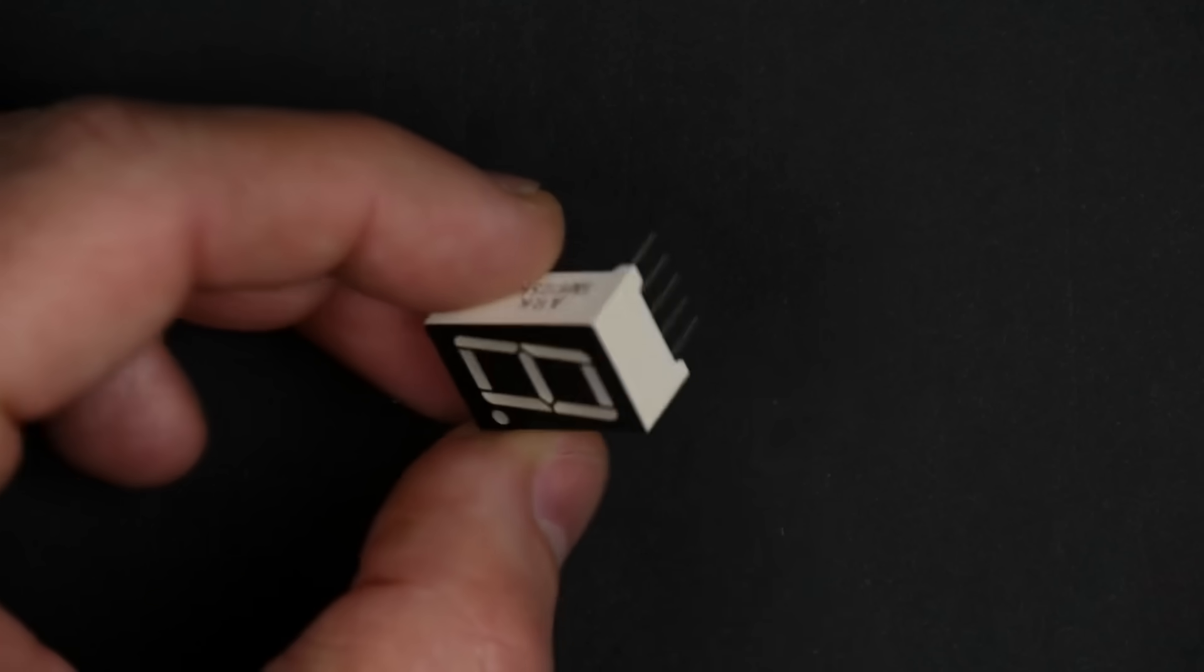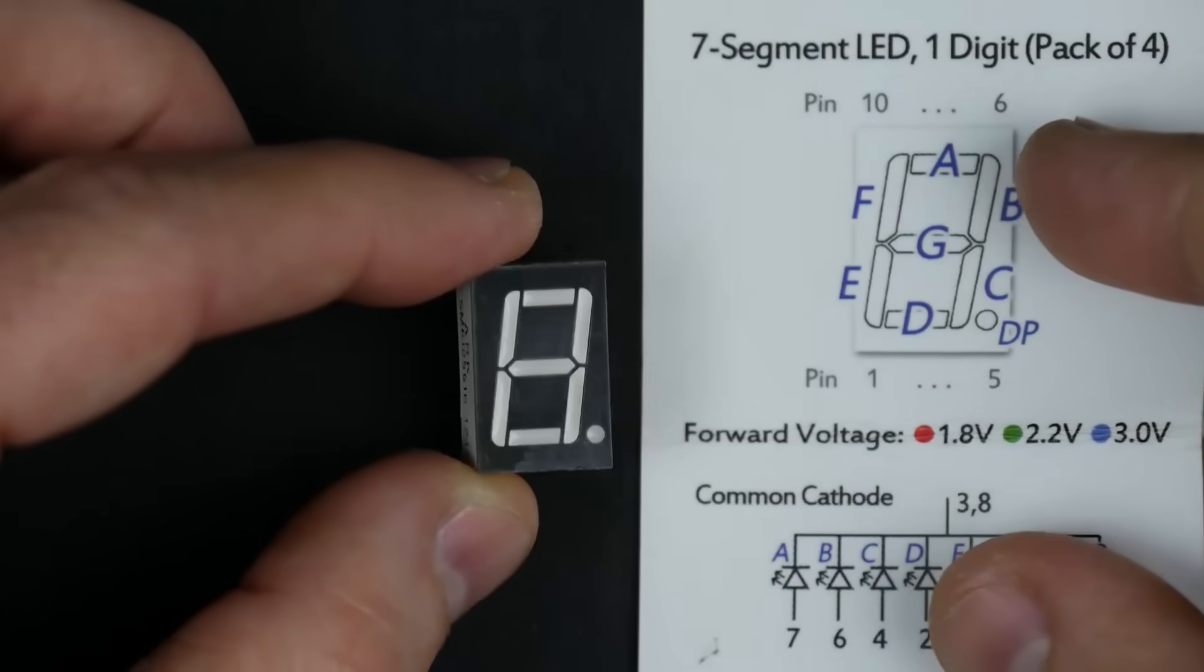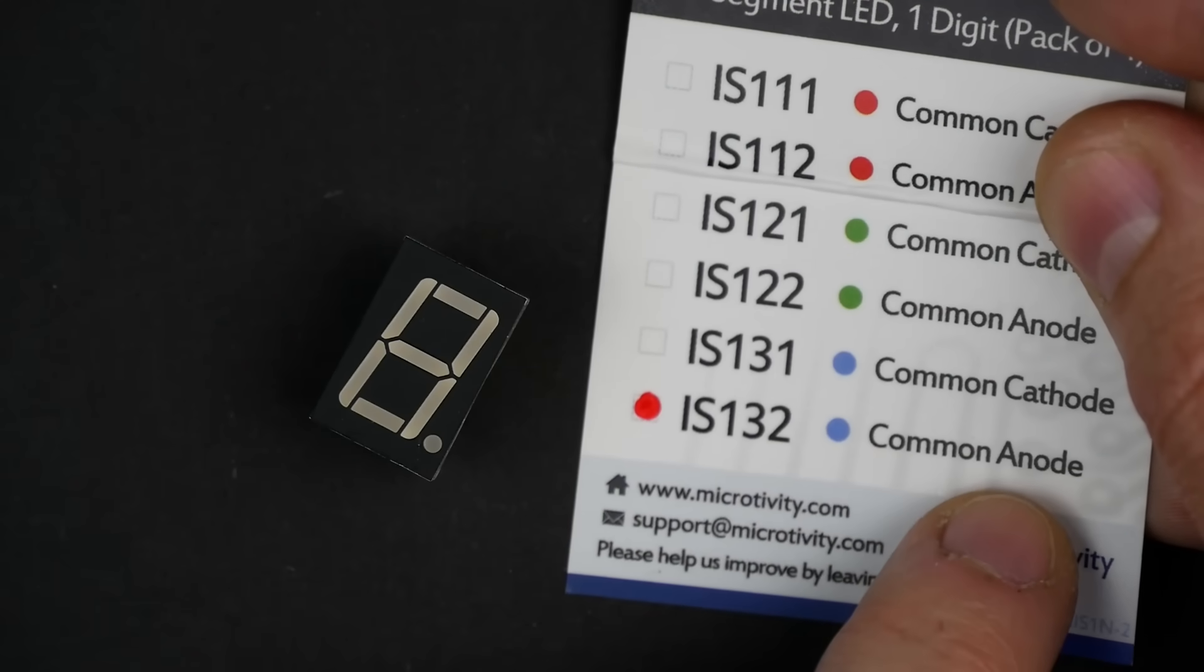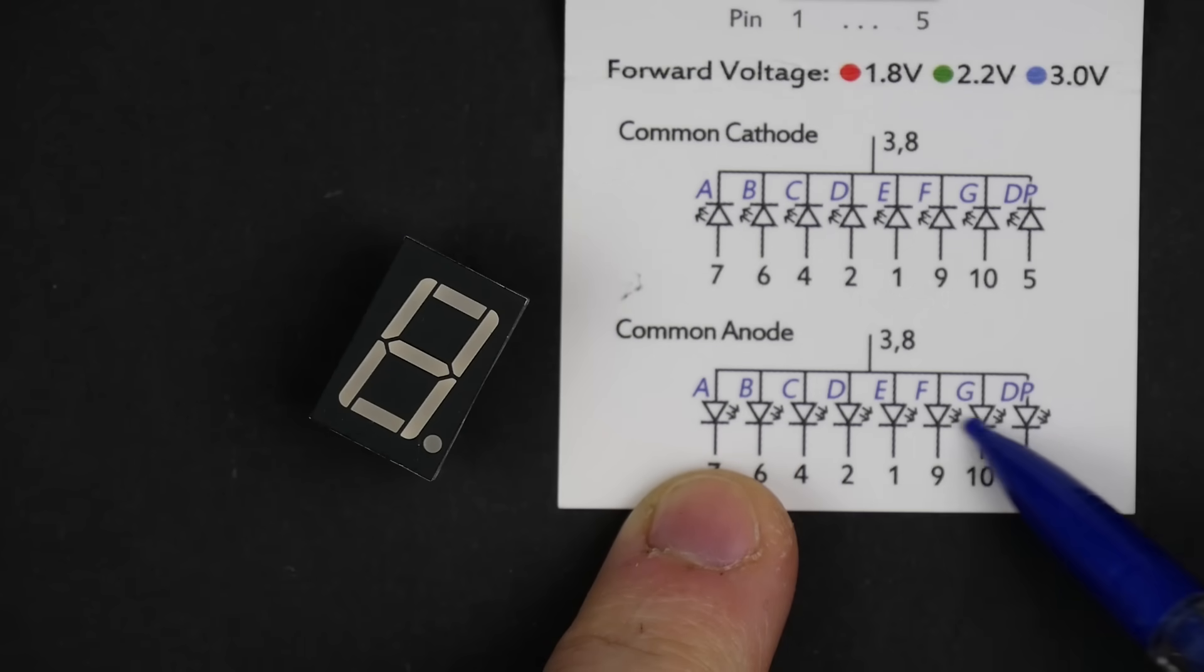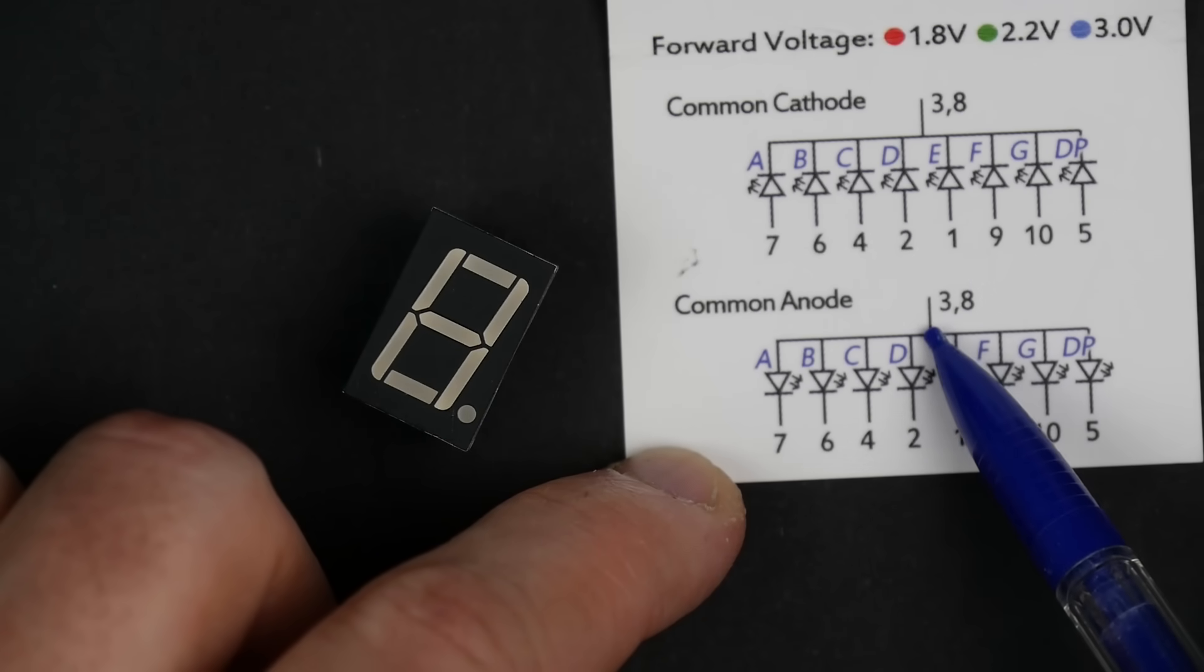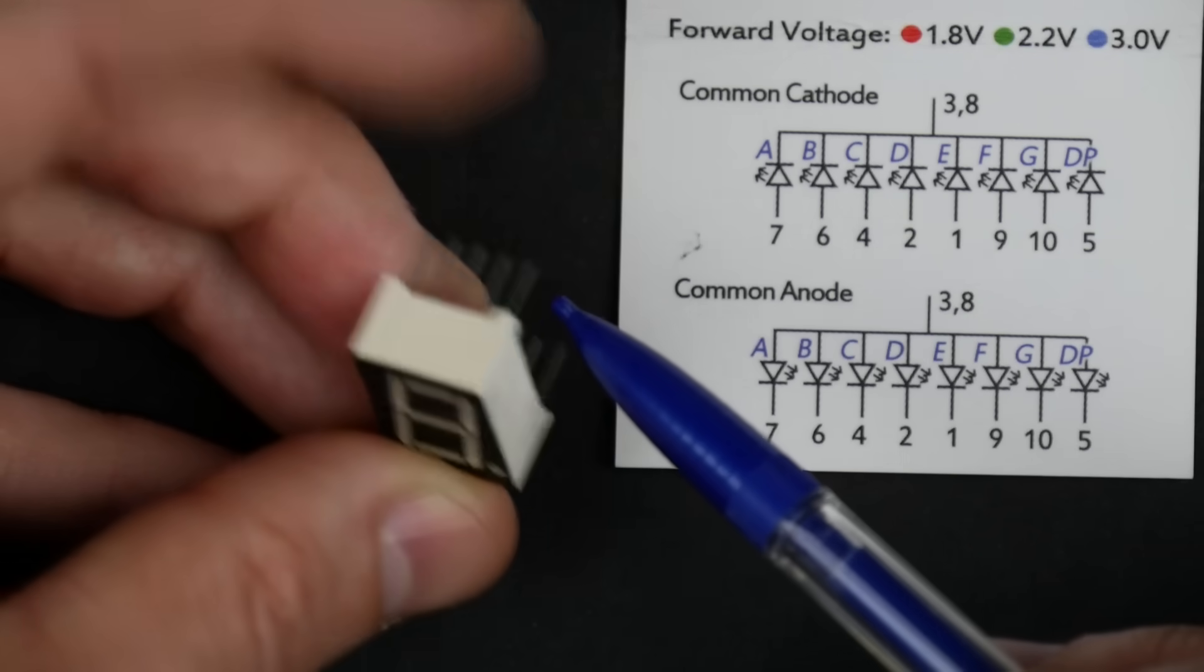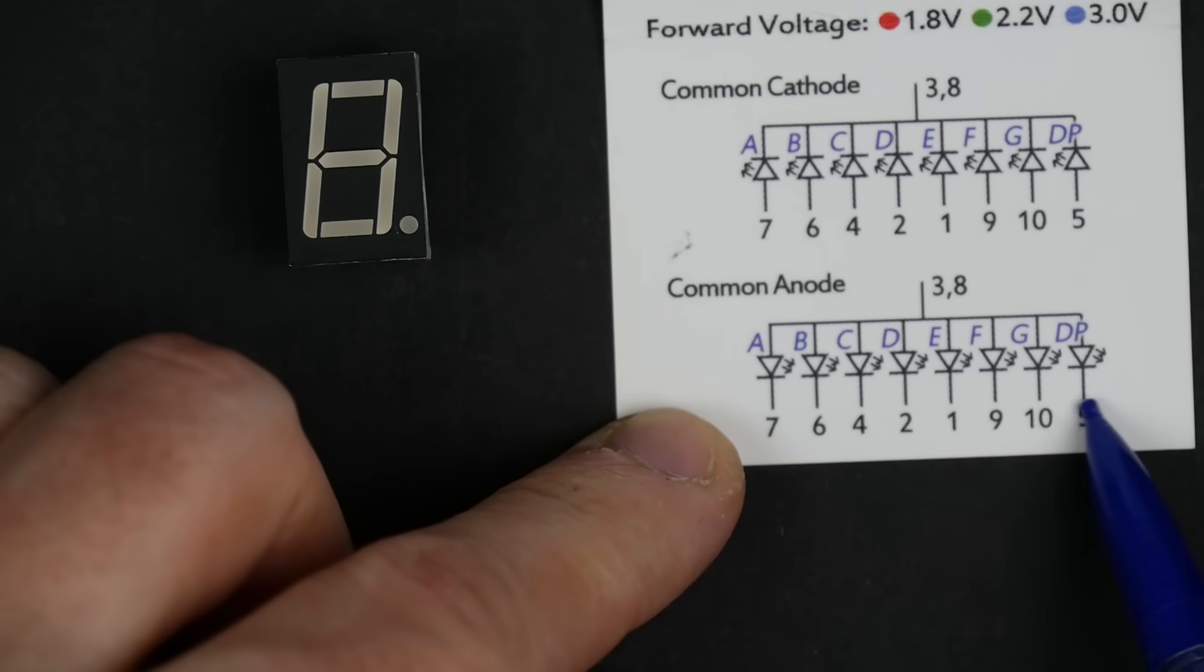So let's take a look at how these display modules work. You can see there's some pins on the back and then our display here. And here's the data sheet that comes with it. It comes in a couple different kinds. The one that I have is blue, and it says common anode. What that means is that there's a bunch of LEDs inside this package for each of these different segments, and all of the anodes are tied together. So the positive side of each of these LEDs are tied together on pins 3 and 8.